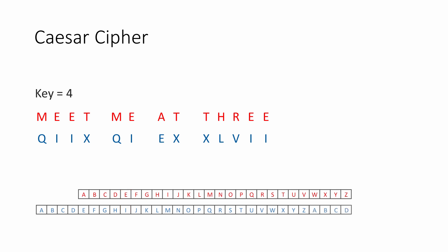Using this method, you might have to start reusing the alphabet for some of the letters that you want to encrypt. With a key of 4, W becomes A, X becomes B, Y becomes C, and Z becomes D.